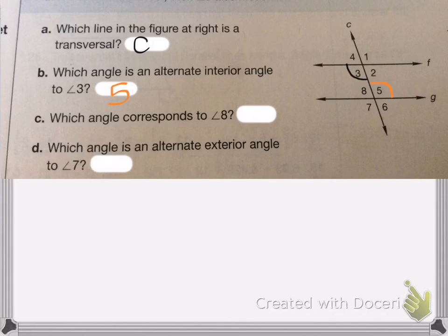Which angle corresponds to angle 8? So here's angle 8 here. Corresponding means in the same location. So 8 is in the upper left. So the other one that's in the upper left is number 4. Let's see angle 4 and angle 5.